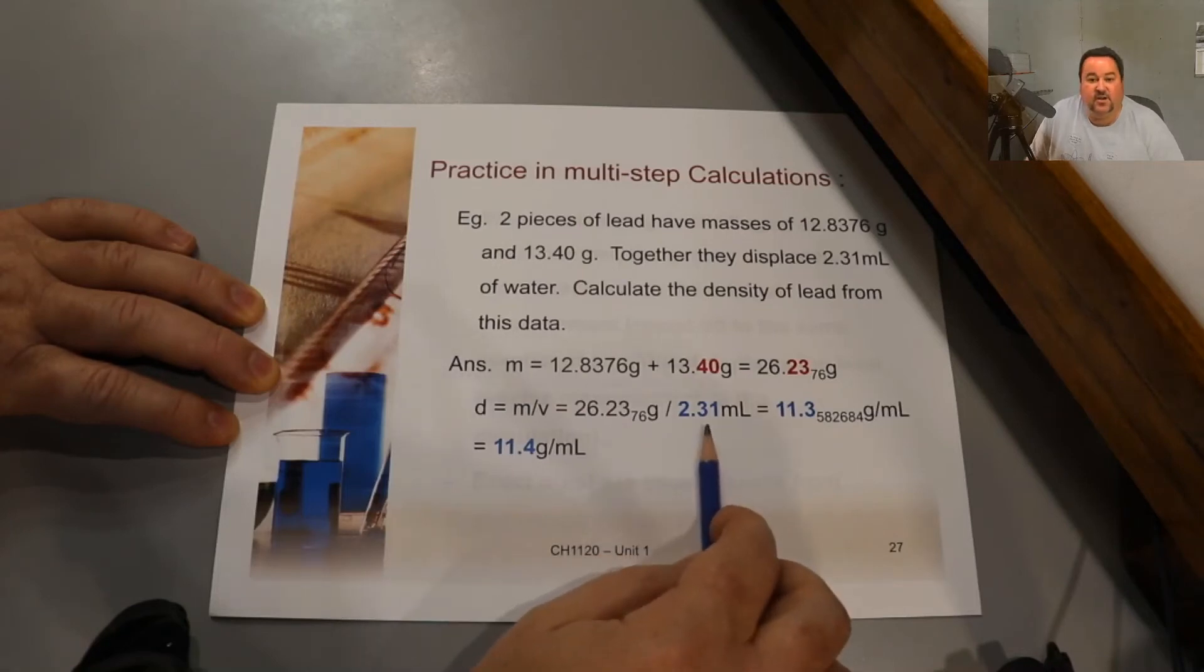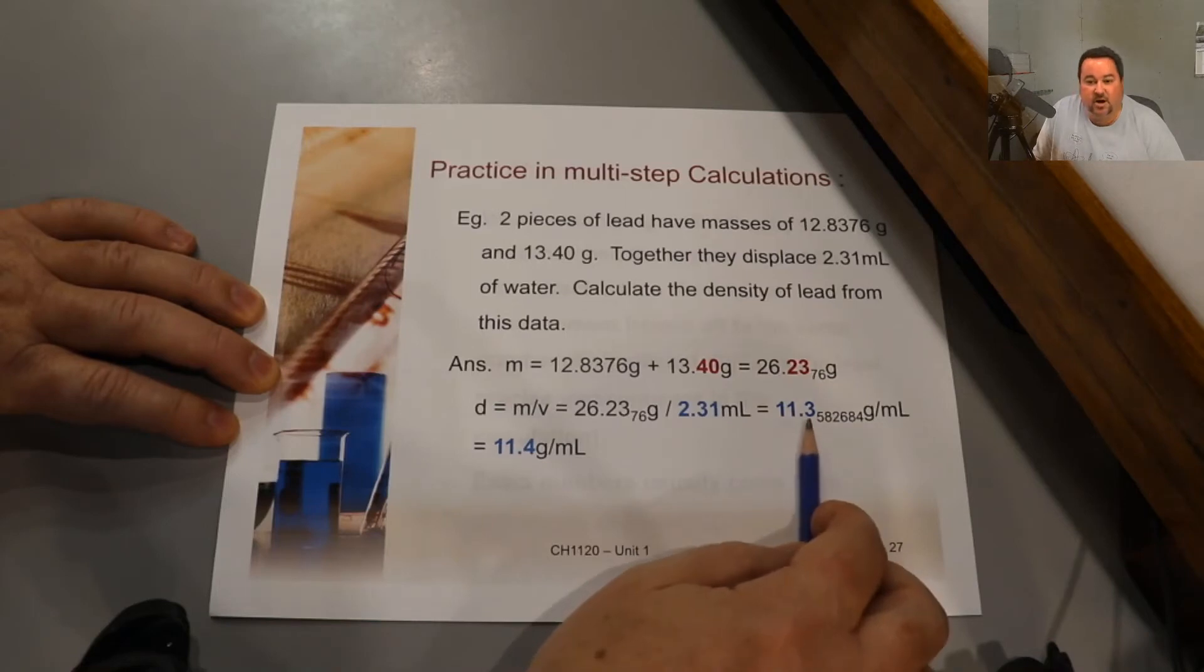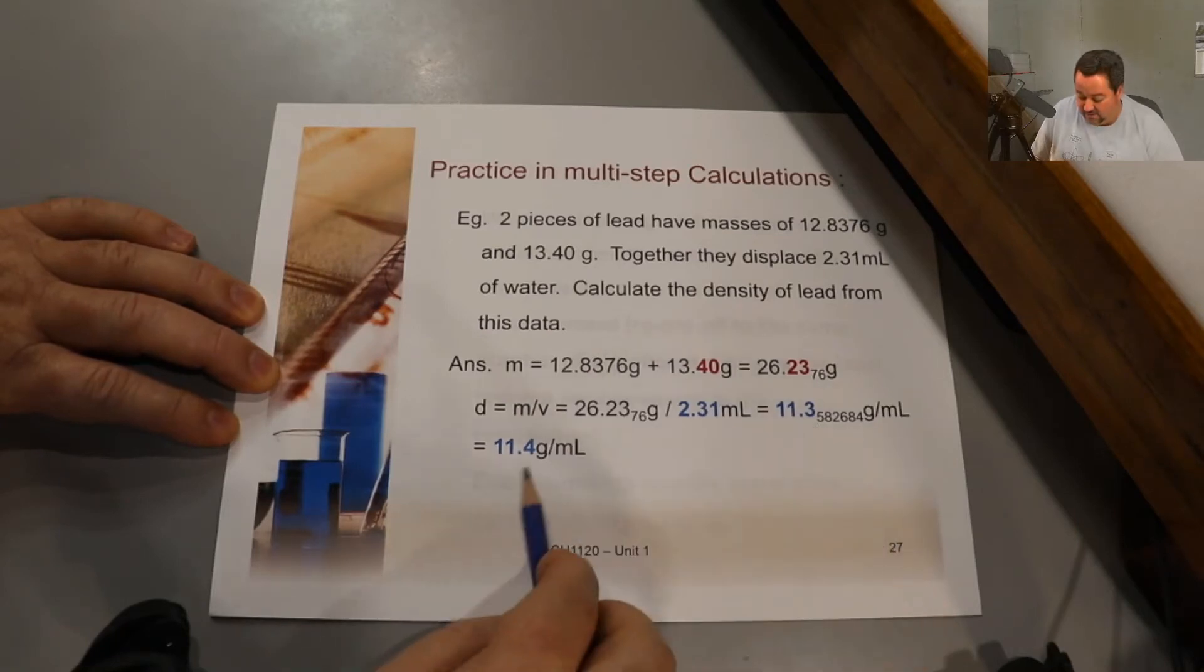This is a division. During multiplication and division, I round to the least number of significant figures. I'm now ready to report my final answer. I see the next digit is a five. I'm going to round up and report my final answer to three significant figures, 11.4 grams per milliliter.